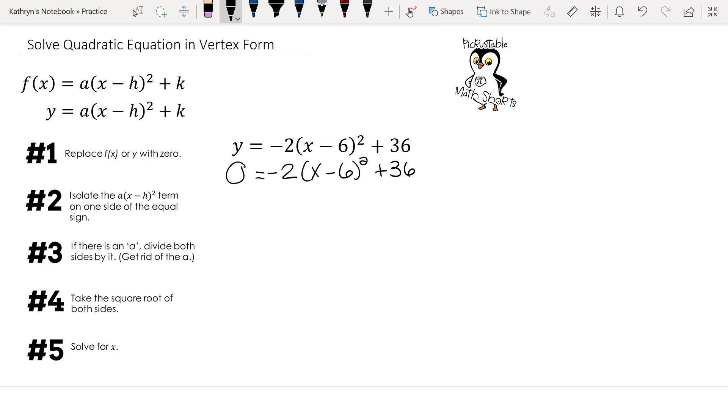Next, we need to get the square by itself. So I'm going to subtract 36 from both sides of the equal sign. This gives us negative 36 equals negative 2 times x minus 6 squared.